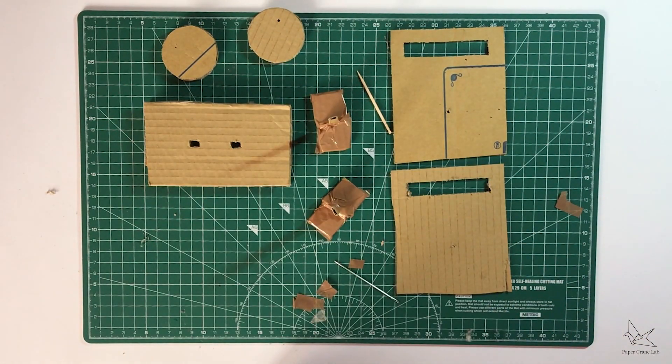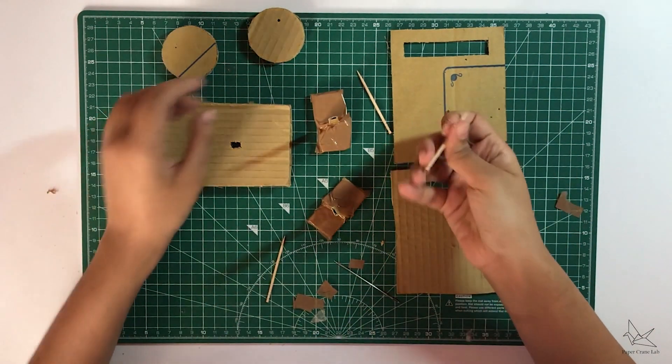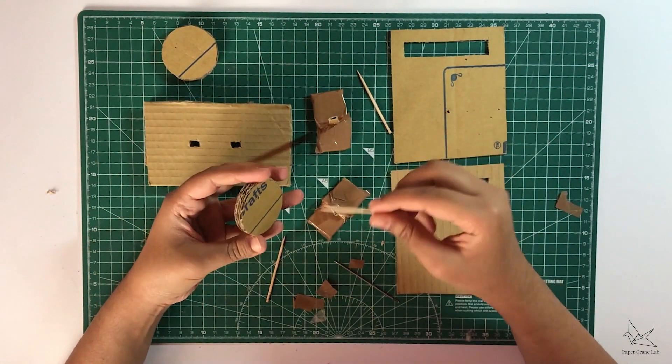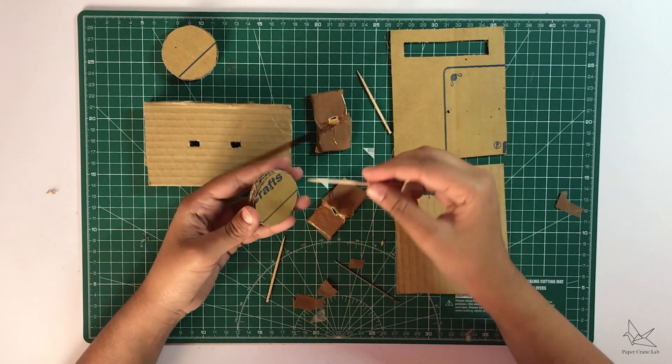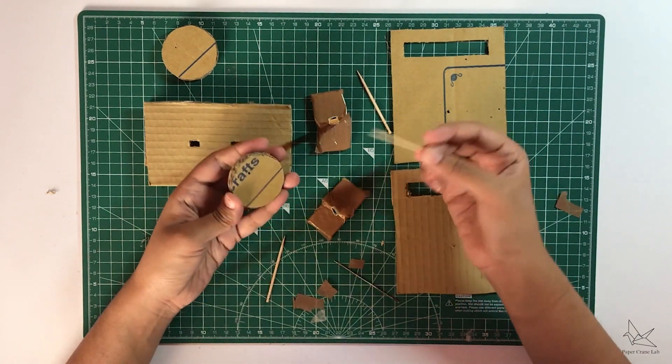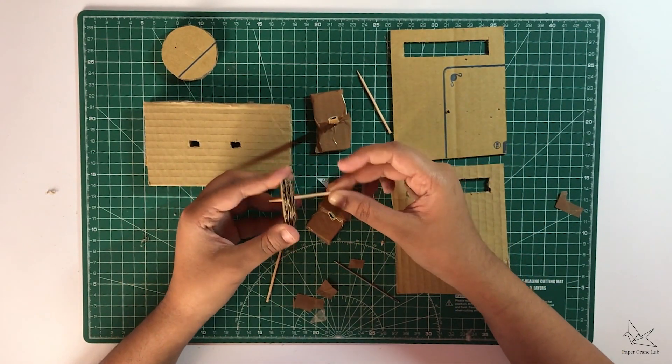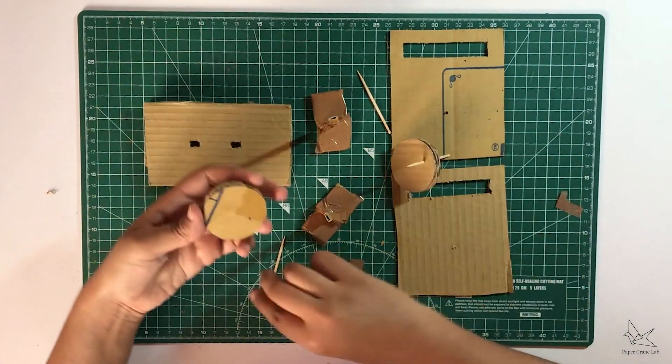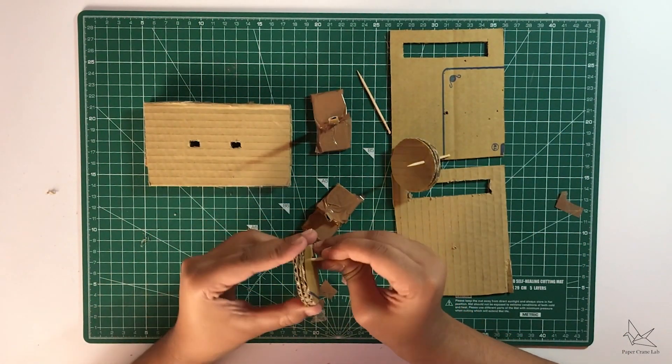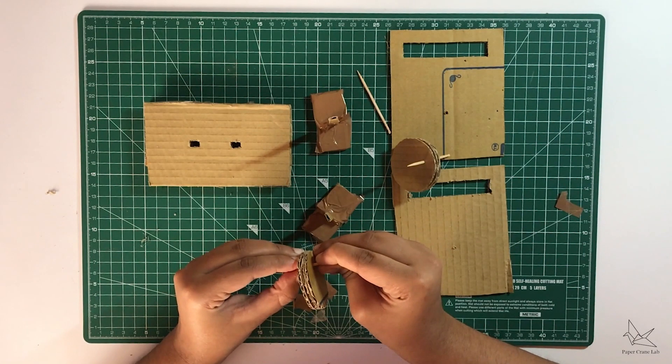The next thing we have to do is assemble our discs together. For doing this we're going to take two pieces of toothpick. If you have something longer like a refill that might work as well but if not you can use a toothpick. Put the toothpick through both of the discs that you have assembled. They should now be dry and firm.